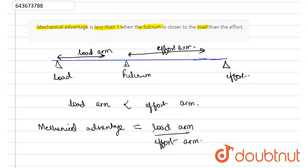And if this is the formula, we relate it to the things that are given to us. It says load arm is less than the effort arm. That means the numerator is less.